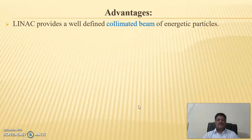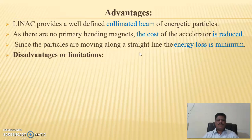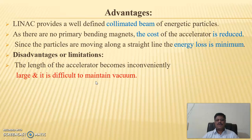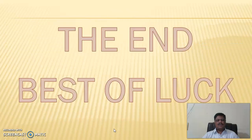What are the advantages and disadvantages of the linear accelerator? LINAC provides a well-defined, collimated beam of energetic particles. As there are no primary bending magnets, the cost of the accelerator is reduced. Since the particles are moving along a straight line, the energy loss is minimum. What are the disadvantages or limitations of LINAC? The length of the accelerator becomes inconveniently large and it is difficult to maintain vacuum throughout the tubes. The ion current is available in the form of pulses of short duration. A great number of driver devices and their associated power supplies are required. To overcome this, we will discuss cyclotron and betatron. Best of luck.